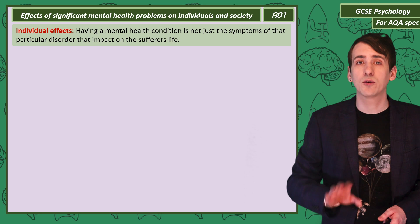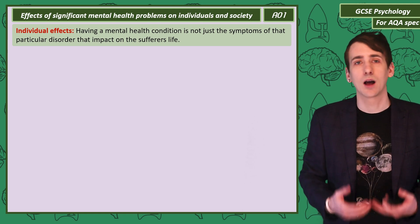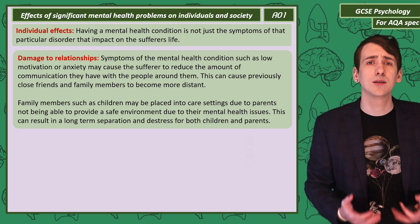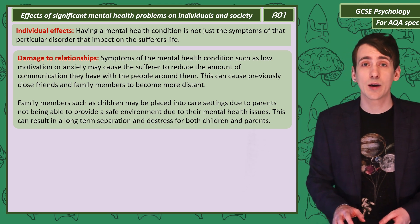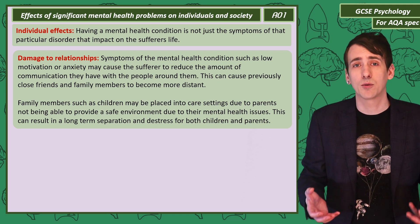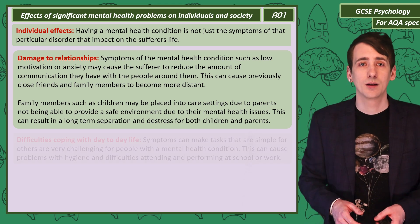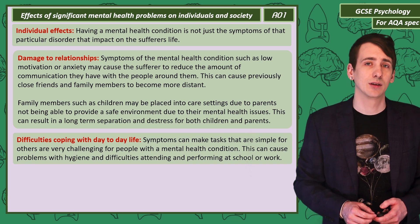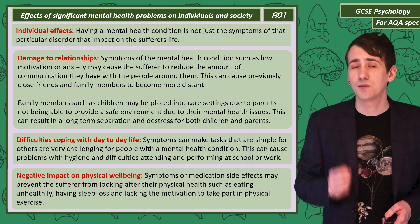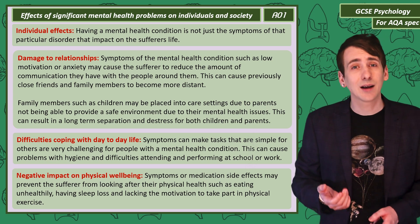Thinking about the effects on an individual — beyond the symptoms themselves, a mental health condition can impact other areas of life. Symptoms like low motivation and anxiety can cause a reduction in communication with the people around them, and eventually close friends and family become more socially distant. In extreme situations, if patients can't provide a safe environment, children might be placed in care, and that prolonged separation can lead to distress for both parents and children and may result in permanent relationship breakdown. Symptoms can also make normal day-to-day tasks difficult, leading to problems with hygiene or difficulties performing in school or work. There can also be a negative impact on physical wellbeing — symptoms or side effects of medication can prevent the sufferer from eating healthfully, may result in sleep loss, and can lower motivation to exercise.